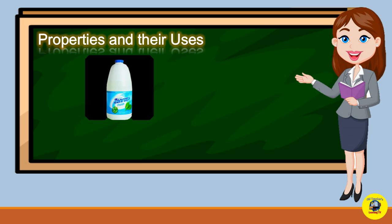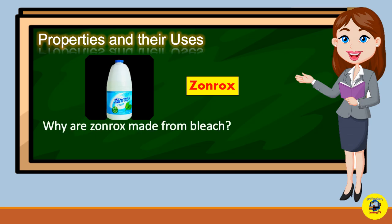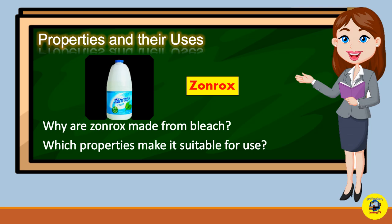Let's try to look at the second example. Can you name it? Correct! It is Zonrex. Why is Zonrex made from bleach? Which properties make it suitable for use?